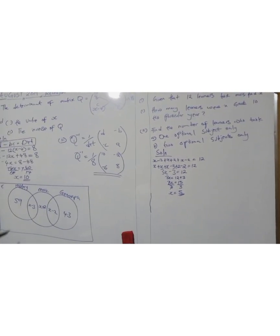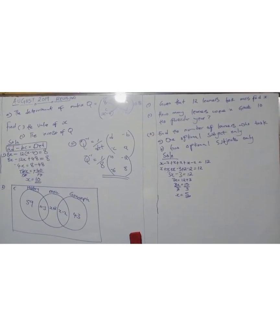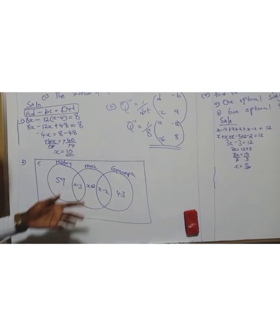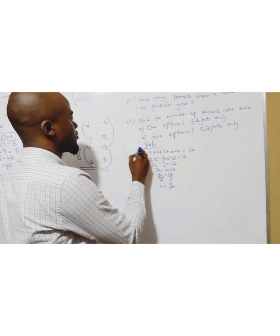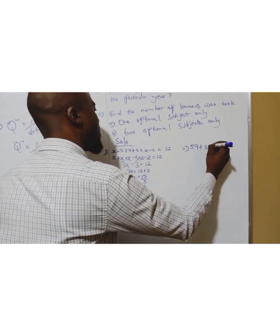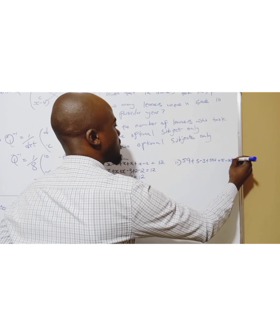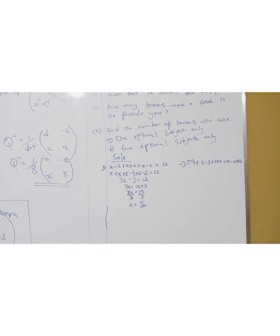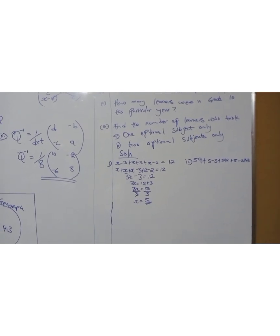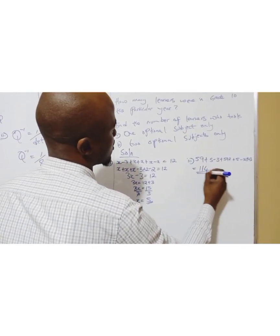I've told you — 12 learners took music. Now, how many learners were in the grade in this particular year? This means they want us to add the total for everything. But with x equal to 5, substituting in: 59 plus (5 minus 3) plus (5 plus 2) plus (5 minus 2) plus 43. That gives us 114.